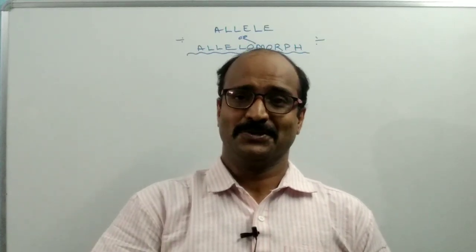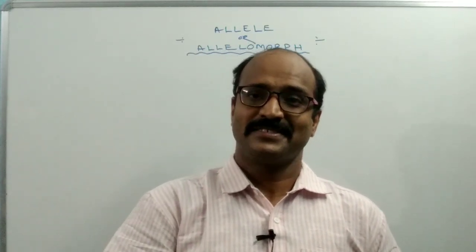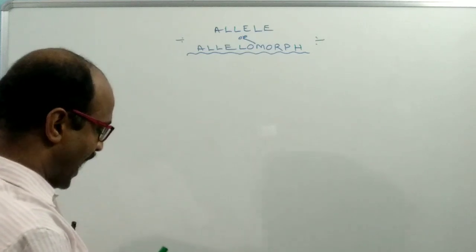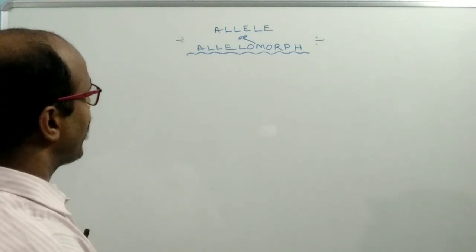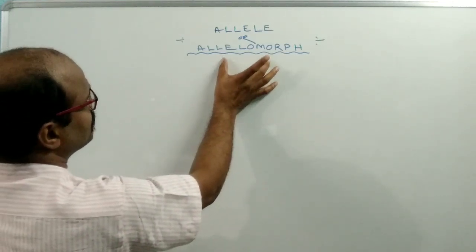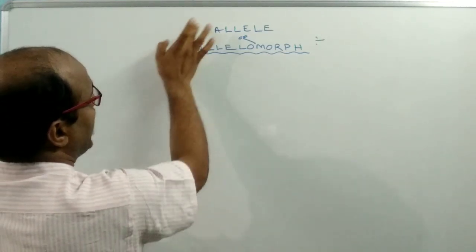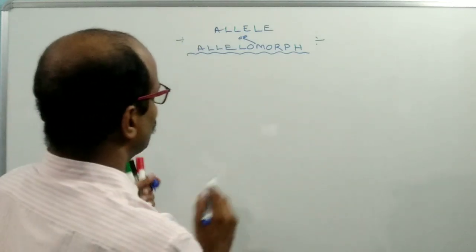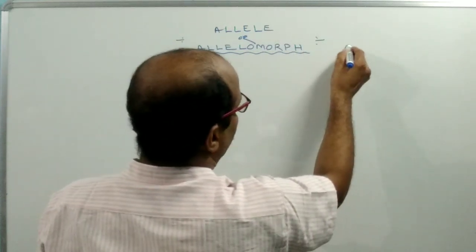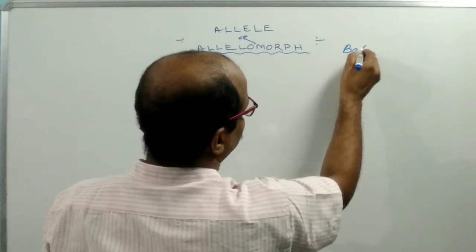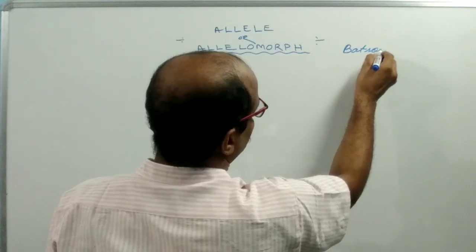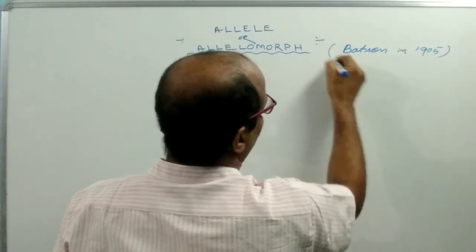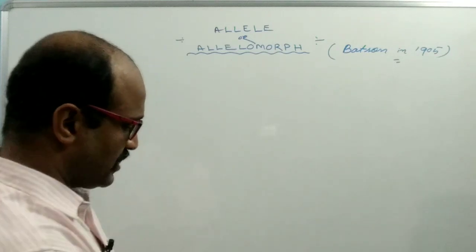Hello, welcome to my conceptual video. In this session, I am discussing the concept of Allele, also known as Allelomorph. The term Allele was proposed by Bateson in the year 1905. Let's start.